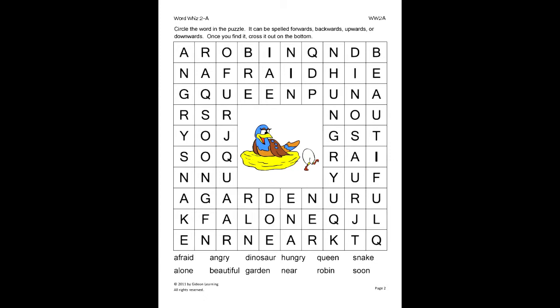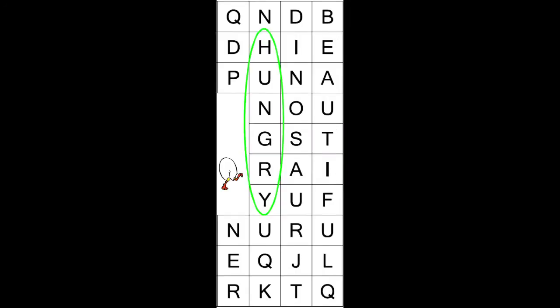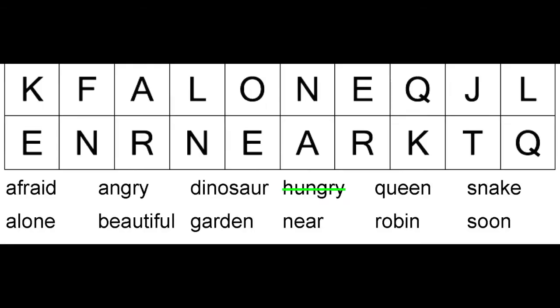For this activity, the student will circle the word in the puzzle. Remember it can be spelled forward, backward, upwards, and downwards. If you find it, cross it out on the bottom. As an example, we will find the word hungry. So once we find it, we circle the word and cross it out in the word bank.